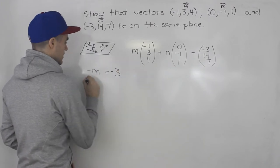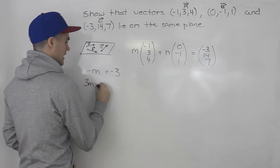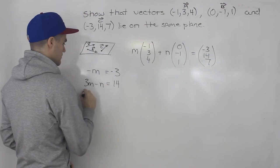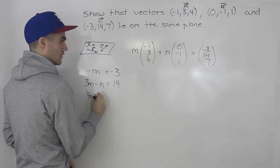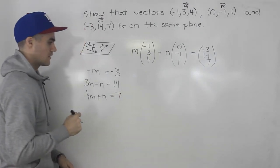m times 3, that is 3m, n times -1 is minus n, that has to equal 14, and then 4m plus n has to equal 7, right?